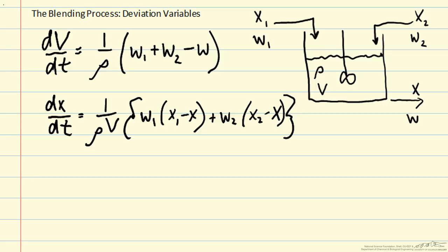Here we're going to introduce deviation variables for any variable that could change in time. To simplify our analysis, we're going to assume that x1 and x2 are constant.